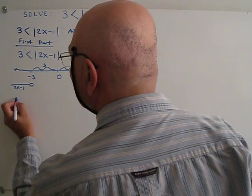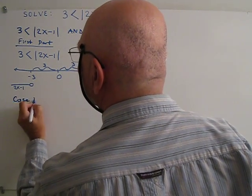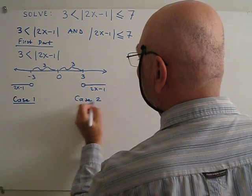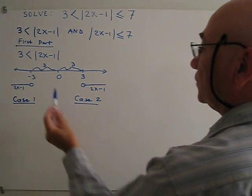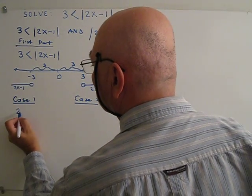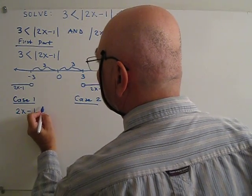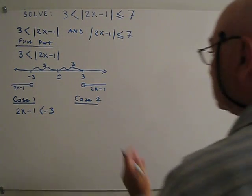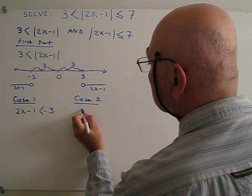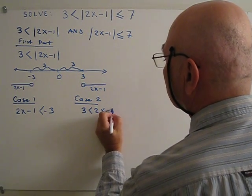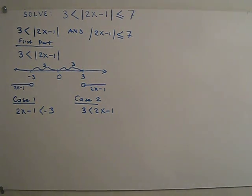We solve this using the case method: case 1 and case 2. If you look at the figure, case 1 will be 2x minus 1 less than negative 3, and case 2 will be 2x minus 1 greater than positive 3.